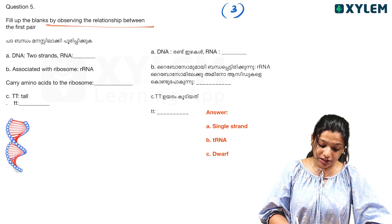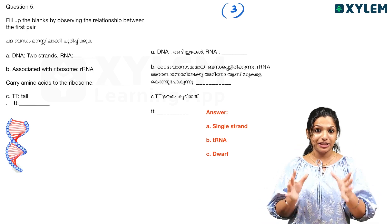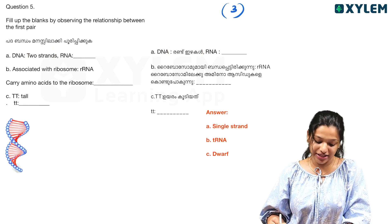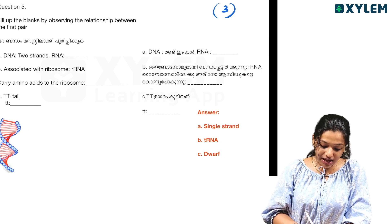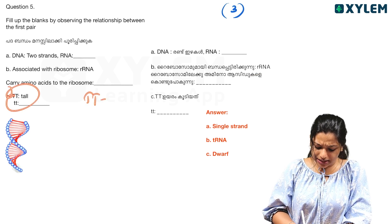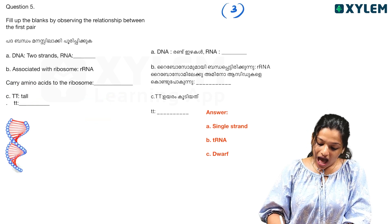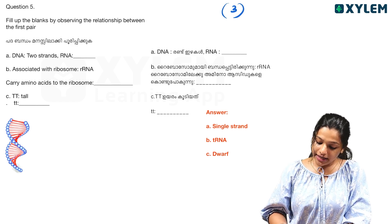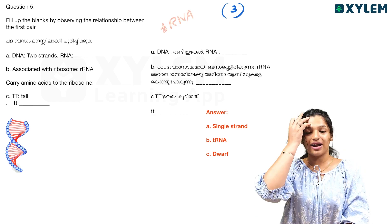The fifth question is to fill in the blanks by observing the relationship between the first pair. DNA has two strands. RNA has a single strand and is associated with ribosomes. The types of RNA include messenger RNA, transfer RNA (T-RNA), and ribosomal RNA.